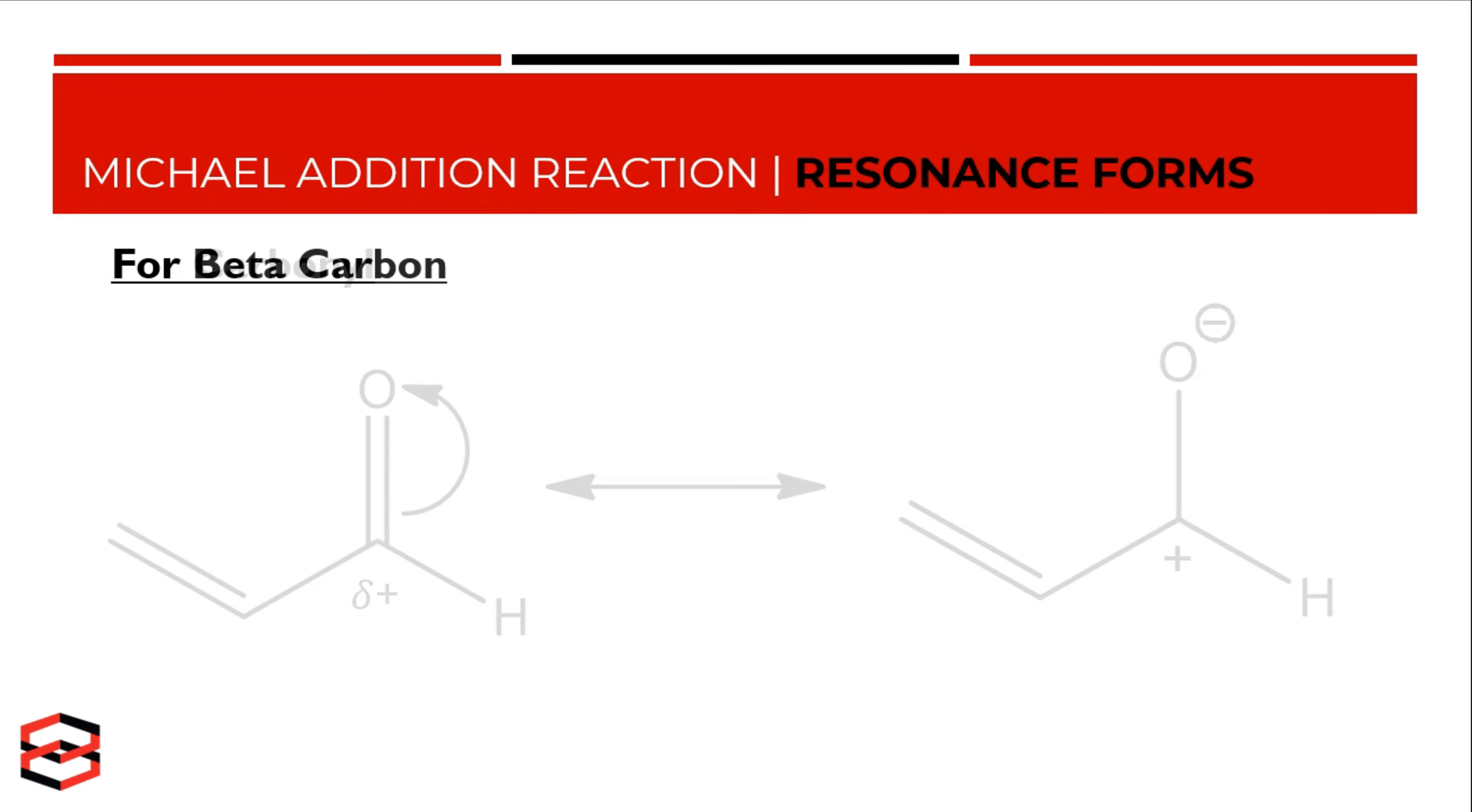And now to show that the beta carbon is electrophilic as well, here's what we can do. If we draw the resonance structure for that molecule based on these arrows, we could put a positive charge on the beta carbon, showing that it's electrophilic in nature.